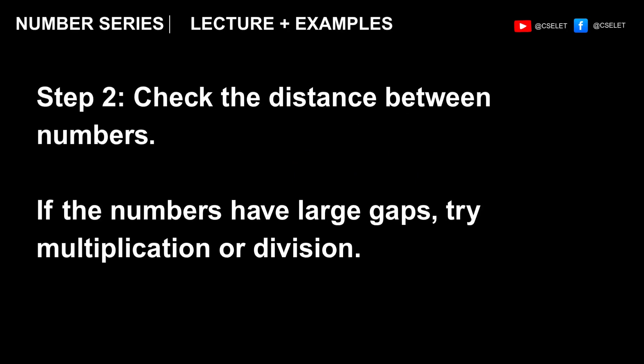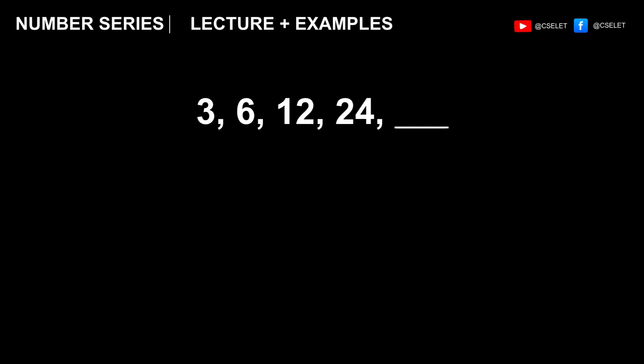Now, if the numbers have large gaps, try multiplication or division. Here's an example. We have 3, 6, 12, and 24. So clearly, the numbers are ascending. And the increase is unusual. The gaps are different. 3 times 2 is 6. 6 times 2 is 12. 12 times 2, 24. And therefore, 24 times 2 is 48. 48 is the correct answer.